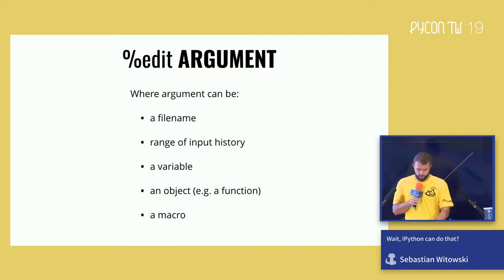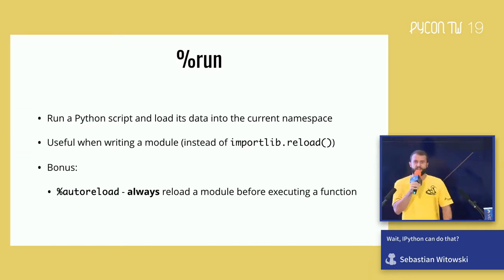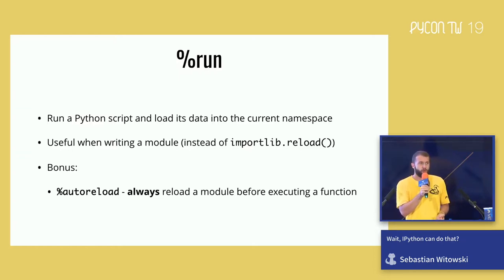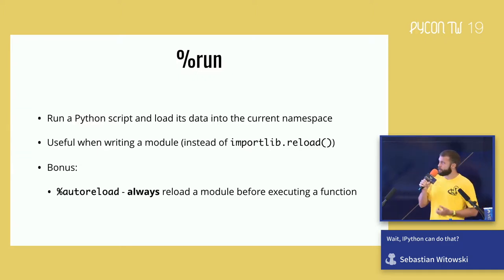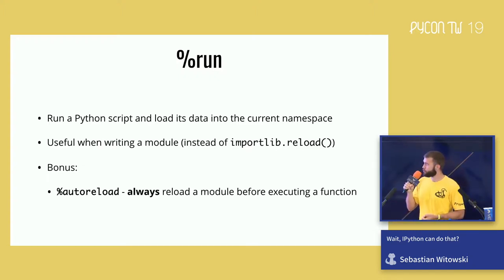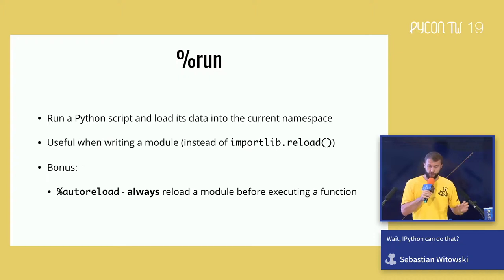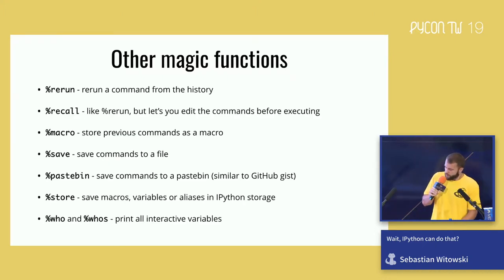And if you recorded a macro, you can pass the macro name to `edit`. The `run` magic command will run a Python script. I find it very useful when writing a module and wanting to test it — if I change the module after importing it, I can't just re-import it; I'd need to use `reload` from `importlib`. So simply re-running the module with `%run` is much more convenient. As a bonus, there is a configuration option called `auto reload` — if you enable it, IPython will always reload the whole module before running a function from it.